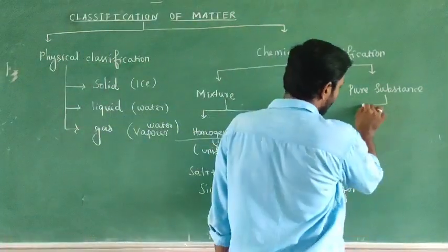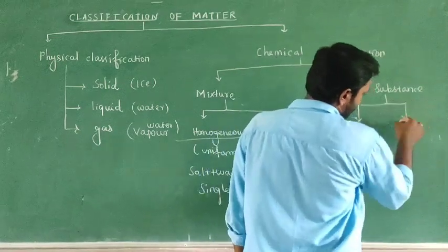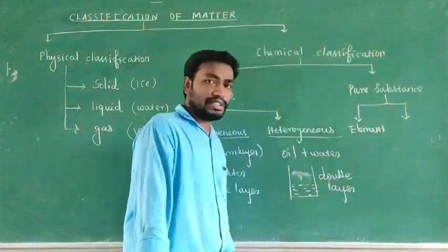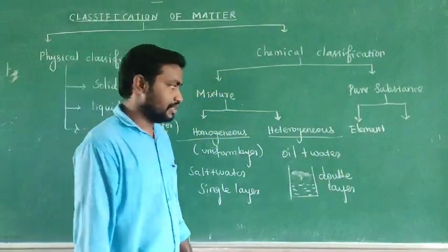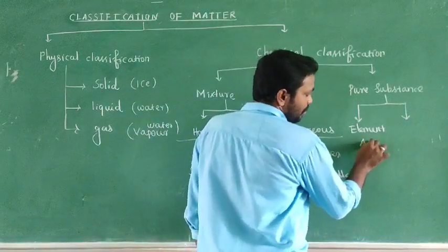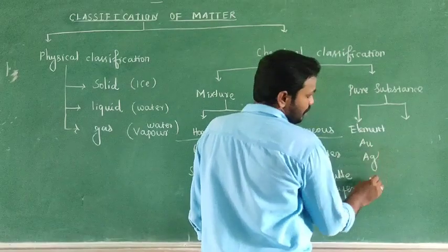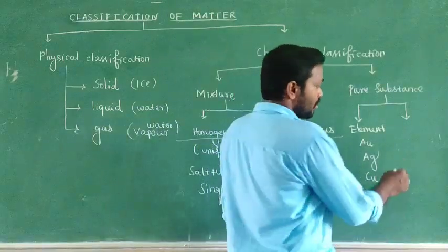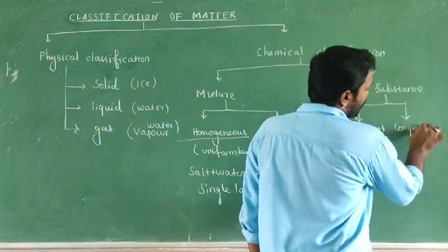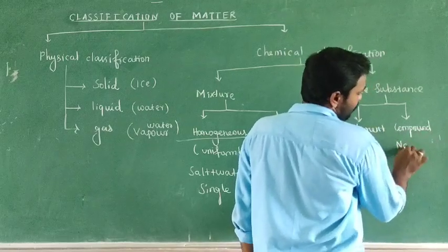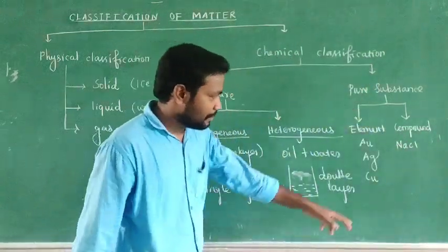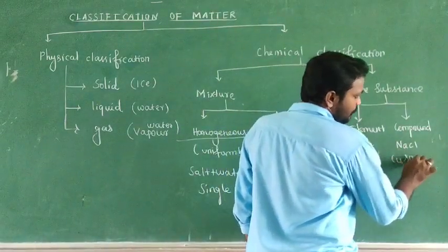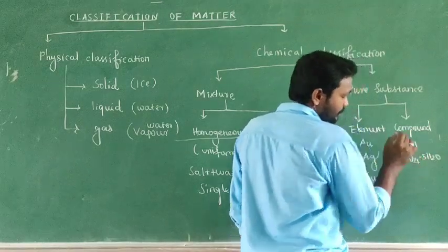Pure substance has two types of classifications. First, element — for example, gold (symbol AU), silver (symbol AG), copper (symbol Cu). Second, compound — for example, sodium chloride (table salt), and copper sulfate (blue crystals).